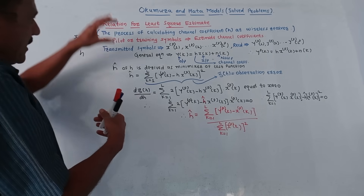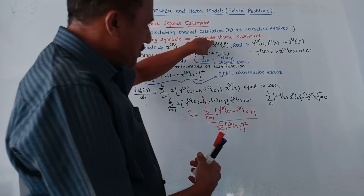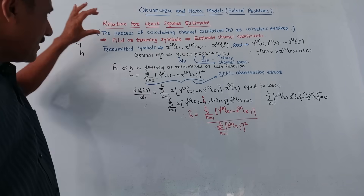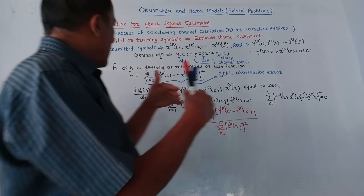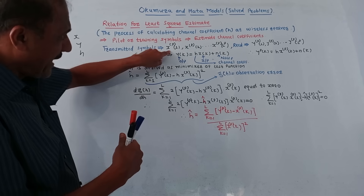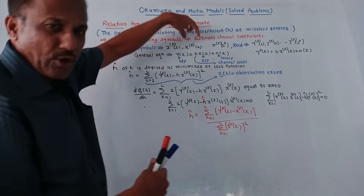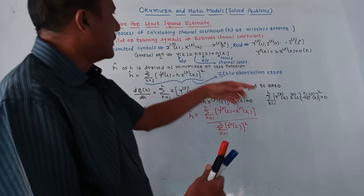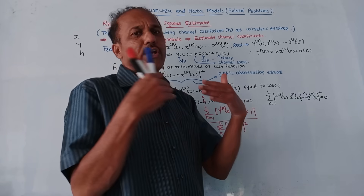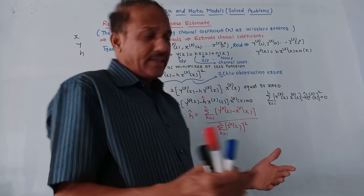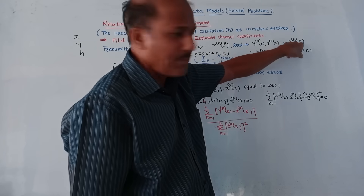This is the system in which we are going to apply pilot or training symbols to estimate the channel coefficients. The transmitted pilot symbols are denoted by xp(1), xp(2), xp(3) — the 'p' stands for pilot or training symbols. When these symbols are sent through the channel — a wireless mobile system — the received symbols are denoted by yp(1), yp(2), up to yp(L).